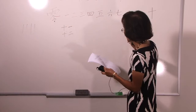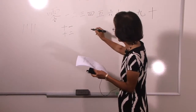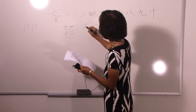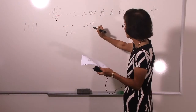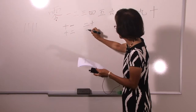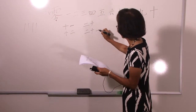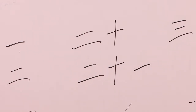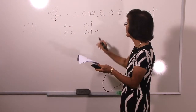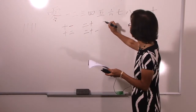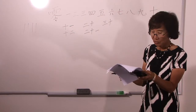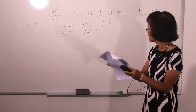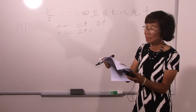Until you come to twenty. What's twenty? Twenty is Er Shi — two tens. Very logical. What's twenty-one? Twenty-one is Er Shi Yi. Then twenty-two is Er Shi Er, Er Shi San, and so on. What is thirty? Thirty is San Shi — three tens. And so on, so now you know all the numbers up to ninety-nine.